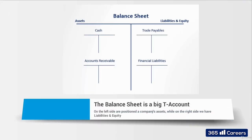Each of these accounts represents a separate general ledger, such as cash, accounts receivable, and PP&E on the asset side, and trade payables, financial liabilities, and common stock on the liabilities and equity side.